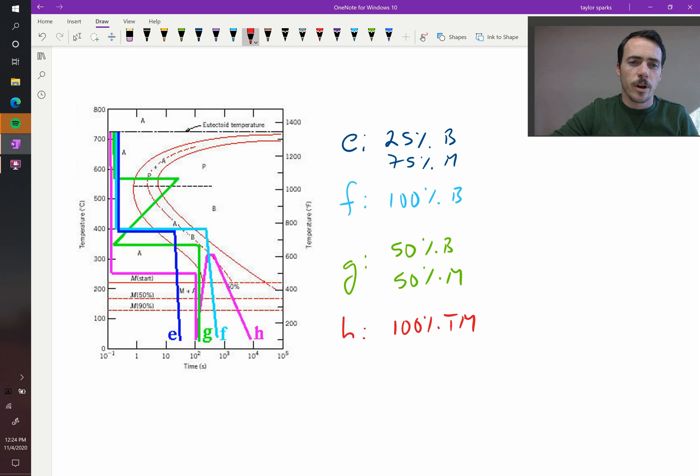So that's how you use these TTT diagrams to predict the microstructure of steel, and again, since we know the properties of these things, martensite being the hardest, perlite and spheroidite being the softest, when you get mixtures of these, then you can get a tunable difference between the hardness and the strength of your material and the ductility of your material. That's all. I'll see you next week.